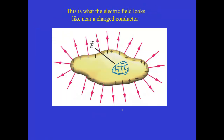Here is an example for an irregularly shaped charged conductor — the electric field just outside would have field lines perpendicular to the surface everywhere. The charge distribution is different at points of high curvature compared to flatter points with low curvature. At points of high curvature — sharp points on the surface — the charge density is highest, and so the electric field is highest there. This is why when you rub your feet on a carpet in wintertime and touch a conducting object, a spark often jumps at a very sharp point on the surface.